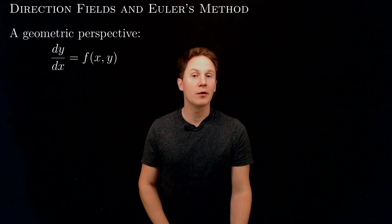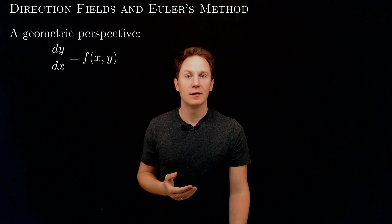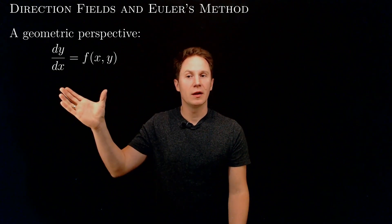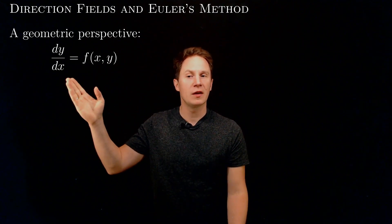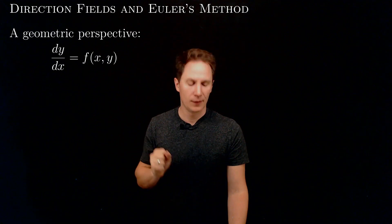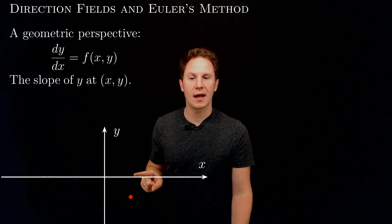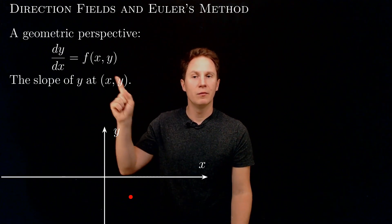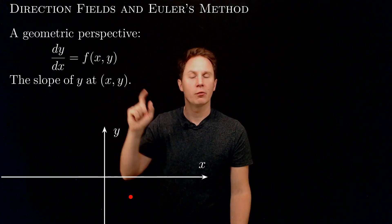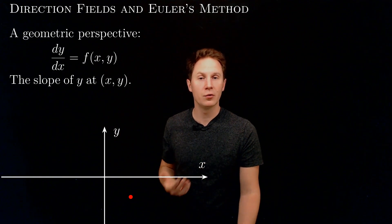First-order ODEs have a very nice geometric interpretation — a geometric perspective that we get by remembering that the derivative is the slope of the tangent line to the graph of the function. Therefore, this equation is telling us that the slope of the tangent line to the graph of the solution y is f. So looking at the xy-plane and picking any point with coordinates x and y, we evaluate the function f to get a number, and that will be the slope of the tangent line to the graph of the solution y.